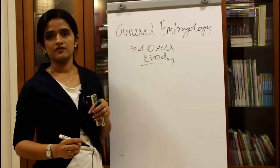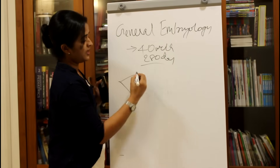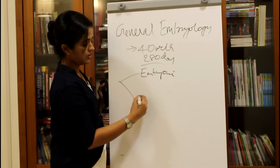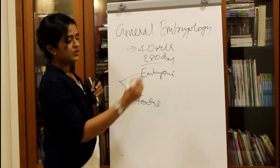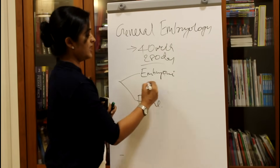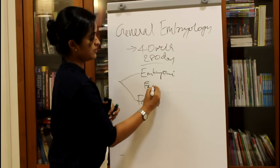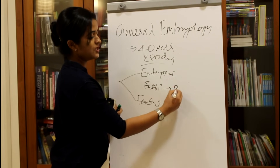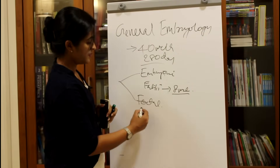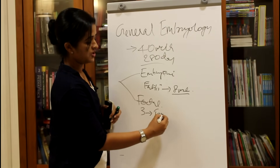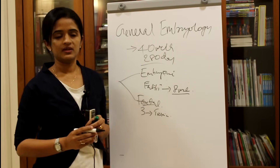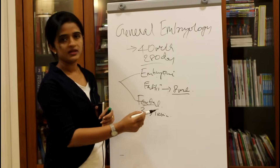This is broadly classified under two main headings. One is called the embryonic period and the other one is called the fetal period. The embryonic period occurs from the point of fertilization in the ampulla up to 8 weeks of development, which is roughly 2 months. From the third month onwards up to the termination of pregnancy it is called the fetal period.